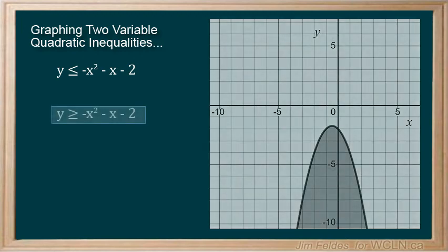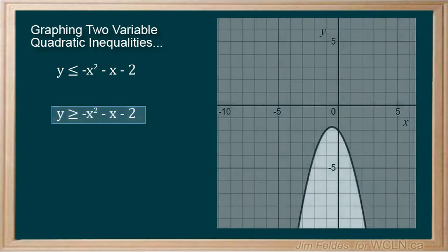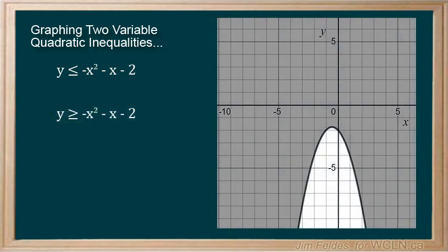If we reverse the inequality sign, our graph shows that all points on or above the boundary line are true, including all x values on the x-axis. Now you know why single variable quadratics without roots have only one interval.